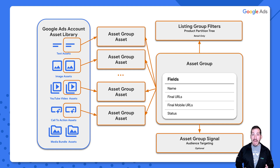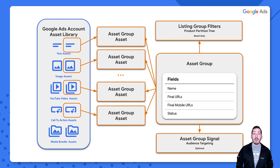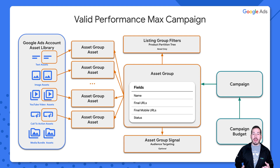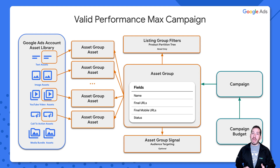For example, if you look at the asset group box, there are arrows pointing away from it towards asset group assets, listing group filters, and asset group signals. That means we'll use the resource name of the asset group with the temporary ID in each one of those entities that we create. So now that we have a good visual representation of the asset group and its related entities, let's take a step back and look at that simplified picture in more detail. This is a visual representation of a valid serving PMAX campaign as we'll create it using the Google Ads API, with our campaign, campaign budget, and asset library on the left. The items in light yellow are all our asset group entities, and this is everything included in our bulk mutate request.